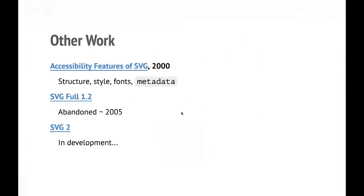There was other work that happened — a note called accessibility features of SVG which was produced around 2000 and tried to explain how SVG might be good for accessibility. Unfortunately at that time, a lot of the stuff was theoretical. Accessibility support in browsers was much weaker than it is now and accessibility support of SVG was almost nonexistent in practice.